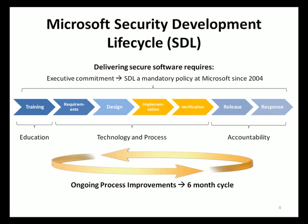In the release phase, the final security review is the major milestone that a Microsoft product team must pass in order to release a product under the SDL. During this meeting, security experts and the development team review all of the activities, mitigations, and security artifacts relevant to the project to ensure that security quality requirements are satisfied. The product team also defines a response plan describing procedures, accountabilities, and contact information in case security vulnerabilities are discovered after the product is operational.